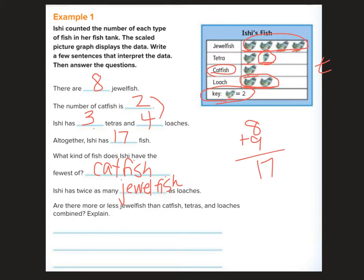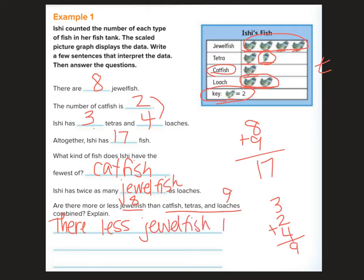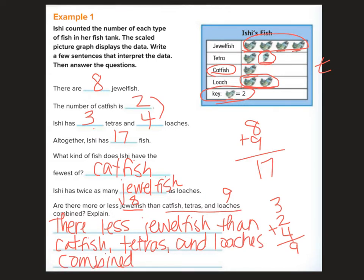Ishi has twice as many blank as loaches. So she has four loaches, twice as many as four would be eight. And we know that she has eight jewelfish. So J-E-W-E-L-F-I-S-H as loaches. Are there more or less jewelfish than catfish, tetras, and loaches combined? If I take tetras 3, catfish 2, loaches 4, I would get 7, 9. We would get nine of these. And jewelfish, there are eight. So I would say there are less jewelfish than catfish, tetras, and loaches combined. So there we have it for this one. This is all we are interpreting the data here.